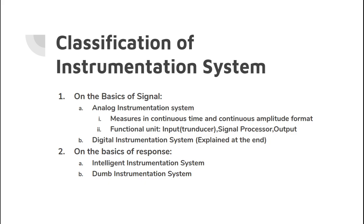What is an analog instrumentation system? It is the system which deals with or which measures in continuous time and continuous amplitude format. It basically has three functional units: the input unit, signal processing unit, and output unit.